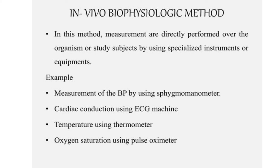For example, to check blood pressure you need a sphygmomanometer; to check cardiac conduction and functioning of the heart you need to connect the patient to an ECG monitor or ECG machine; to check temperature use a thermometer; and to check oxygen saturation of the patient use a pulse oximeter. You perform the measurement directly and get the results directly.